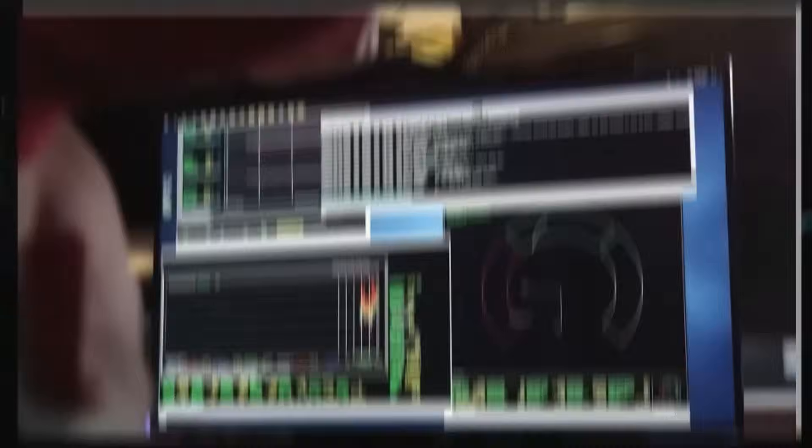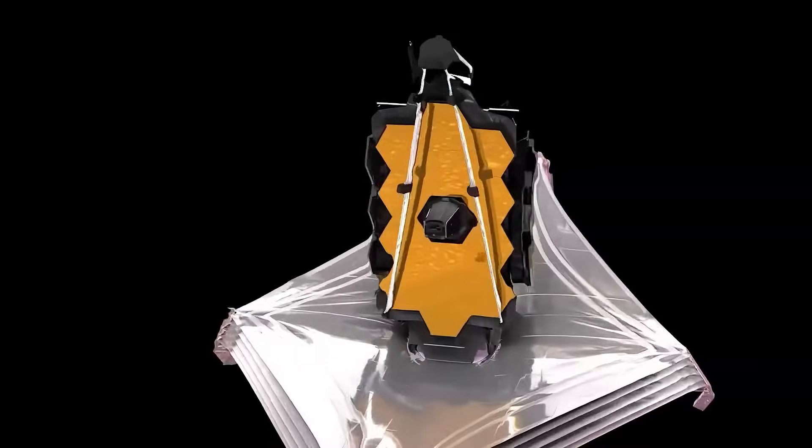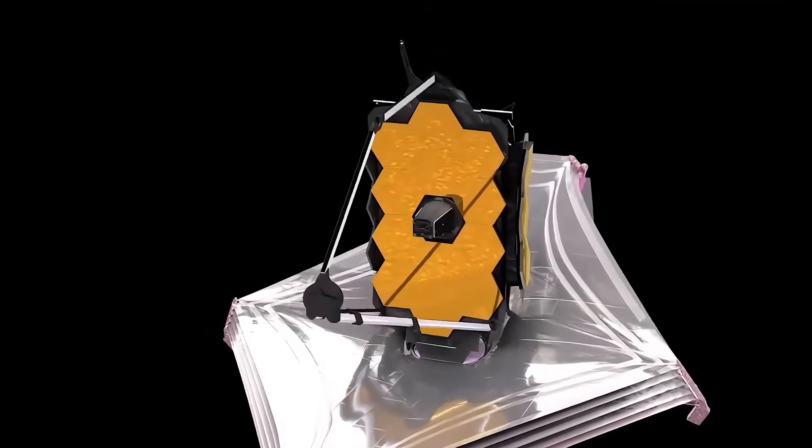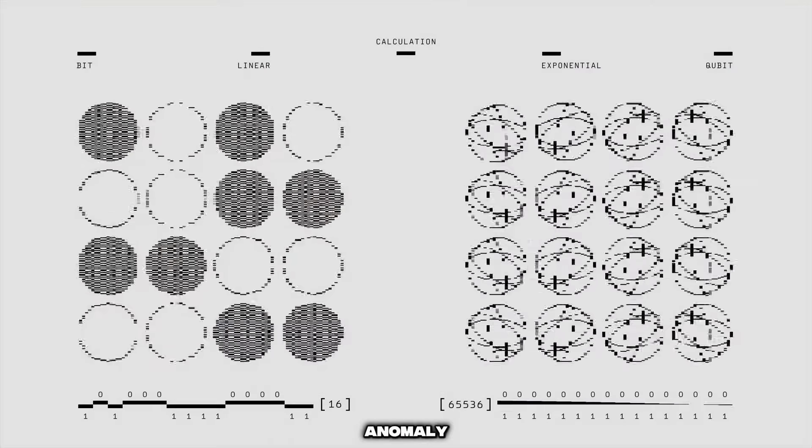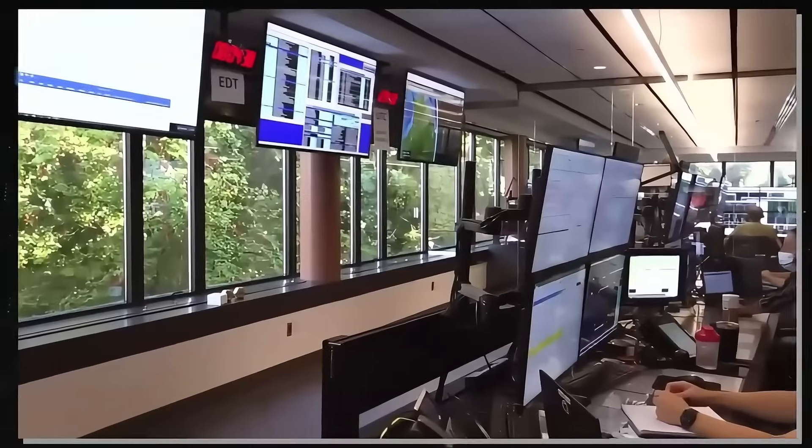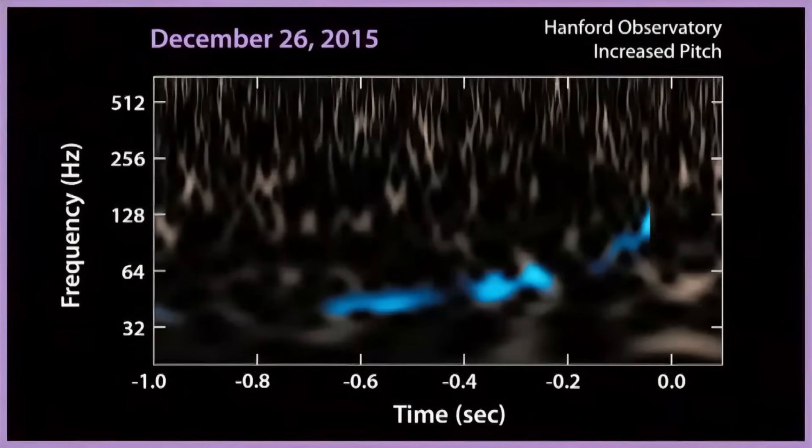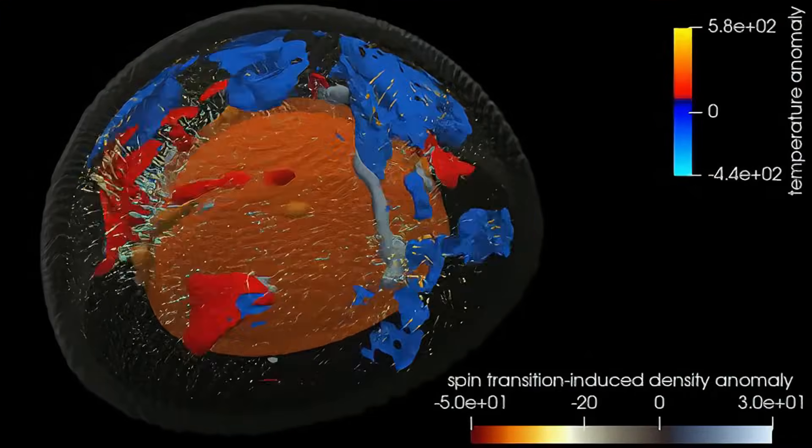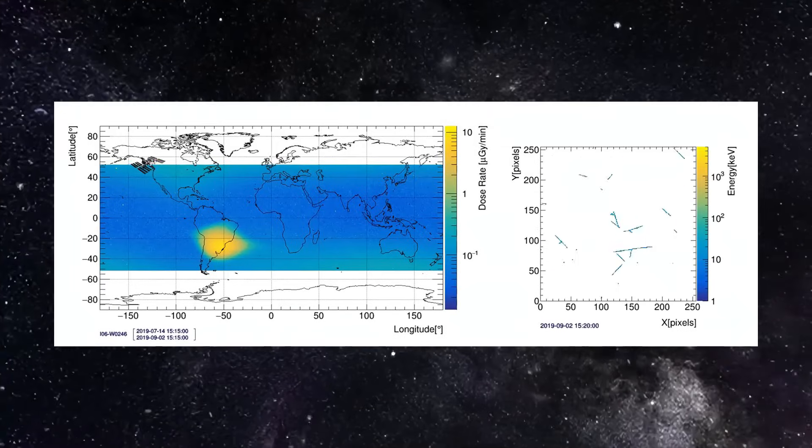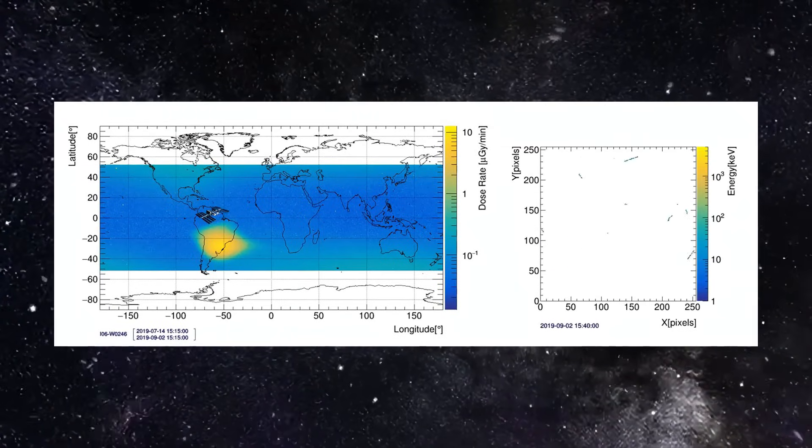Enter quantum AI, a system that harnesses the principles of quantum computing to process information at speeds and levels of complexity that far exceed conventional systems. This quantum AI combed through petabytes of data gathered by the JWST, looking for any anomalies or deviations from expected patterns. And it didn't just identify minor errors or noise in the data. It detected a clear, consistent signal.